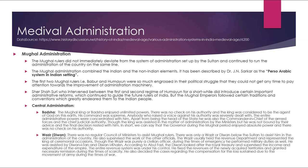Though the Vajir was purely a civilian officer, during times of emergency he performed military duties as well. He was assisted by the Diwan-e-Tan and the Diwan-e-Khas. According to Abul Fazl, the Diwan looked after the royal treasury and supervised the income and expenditure of the empire. The entire revenue system was under his control. He fixed revenues for newly acquired territories and granted necessary remissions during times of scarcity, and also decided cases regarding compensation for losses sustained due to army movements during war.